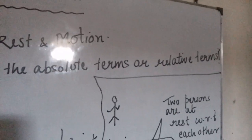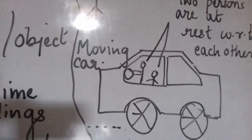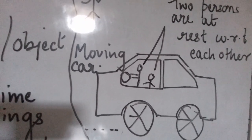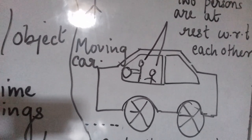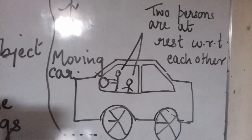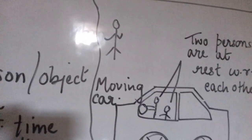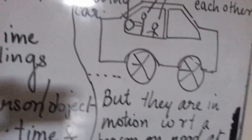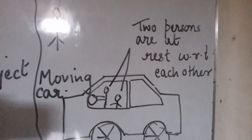The second learning outcome is: are rest and motion absolute terms or relative terms? To understand this, consider two persons sitting in a moving car. If we consider the car to be moving, the two persons are still at rest with respect to one another, because their position is not changing with respect to each other. On the other hand, for a third person standing on the road, their position is changing. So at the same time, they are in motion with respect to the person on the road, while at rest with respect to each other.